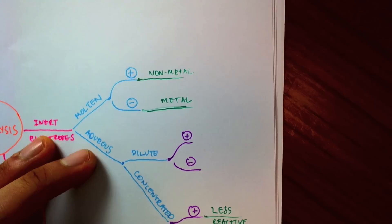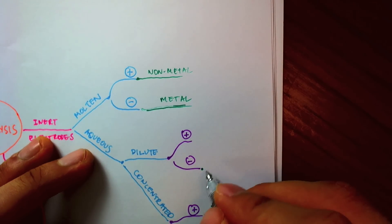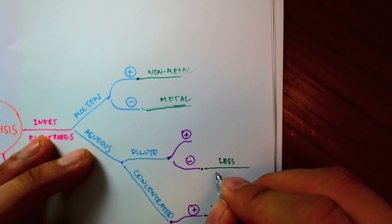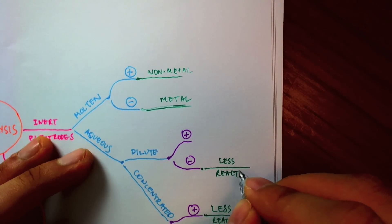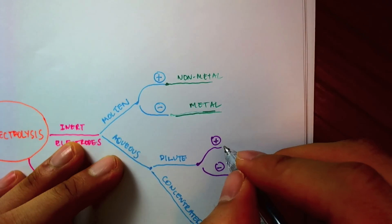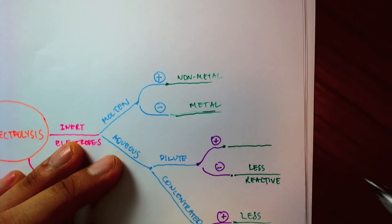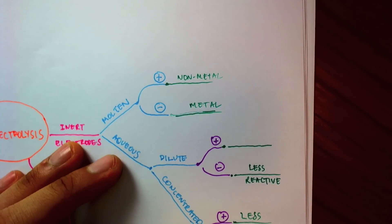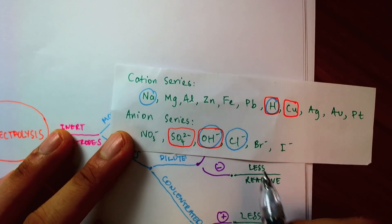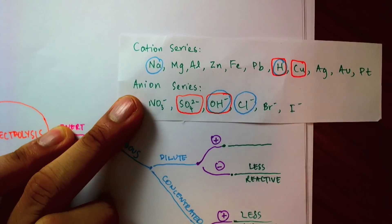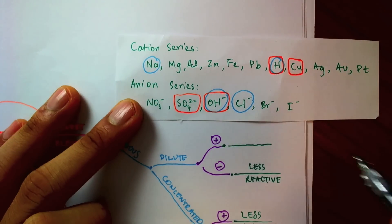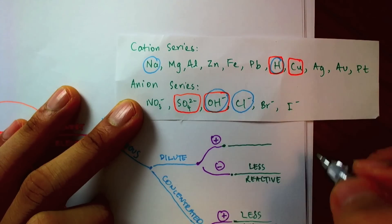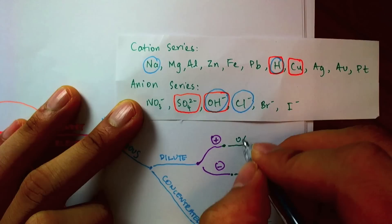Well, for a dilute solution, at the cathode, we would choose the less reactive metal. And at the anode, because of the high concentration of hydroxide ions, so even though, for example, if we would expect chlorine to come out, the hydroxide is actually discharged, and it forms oxygen.